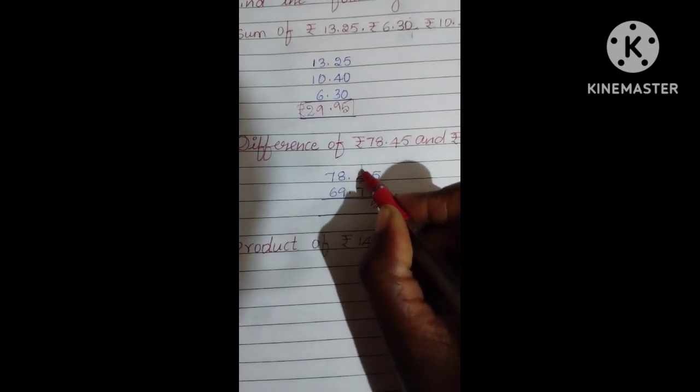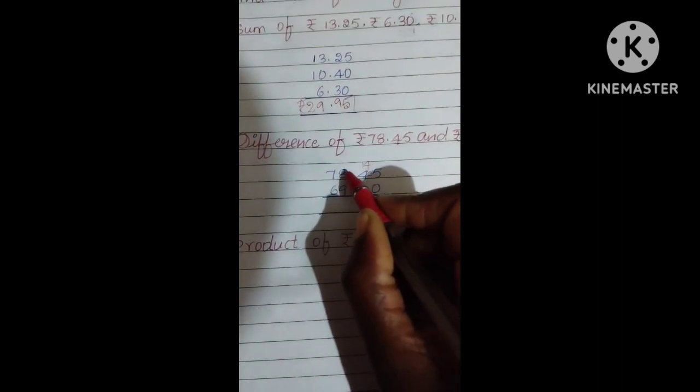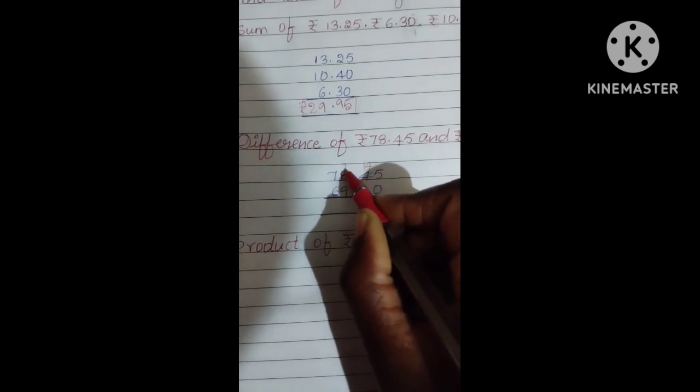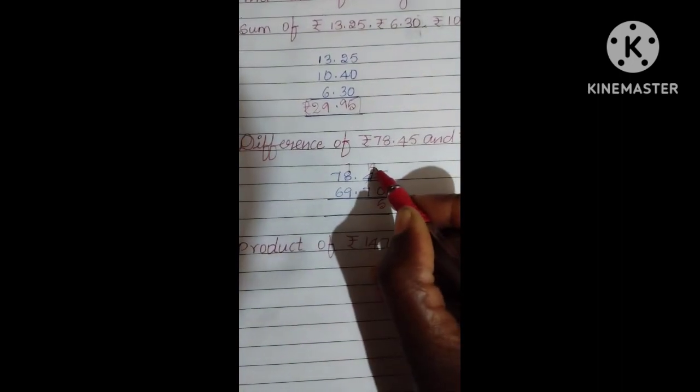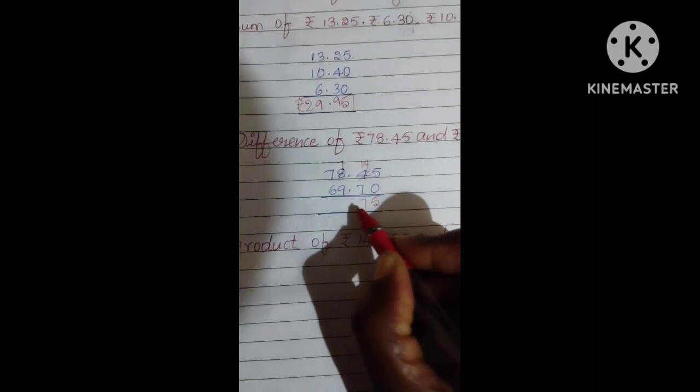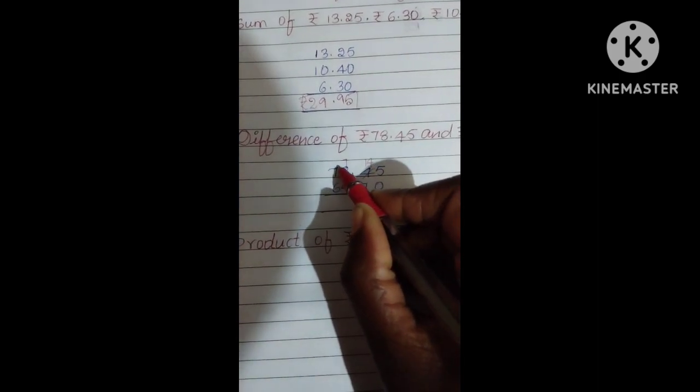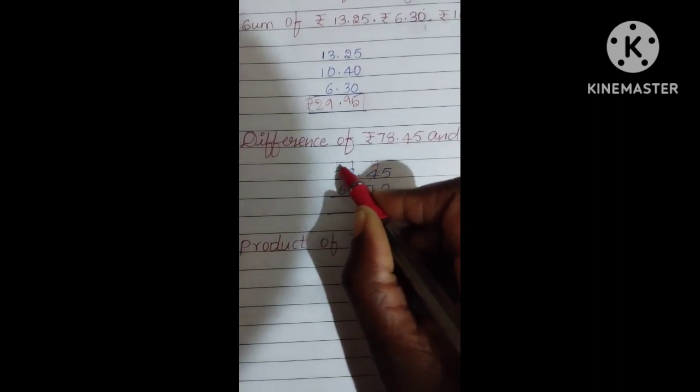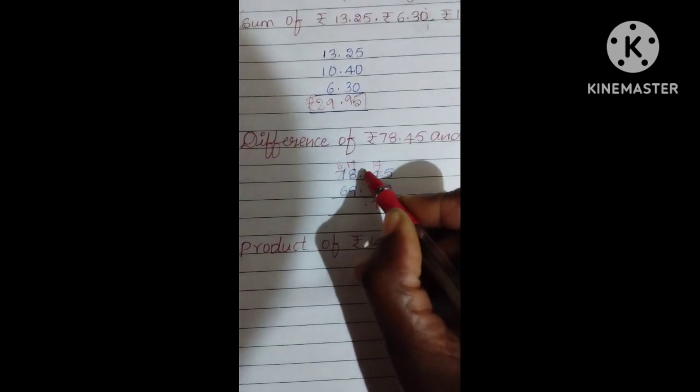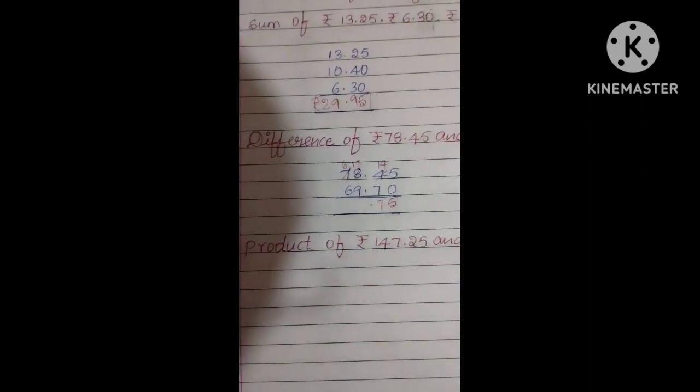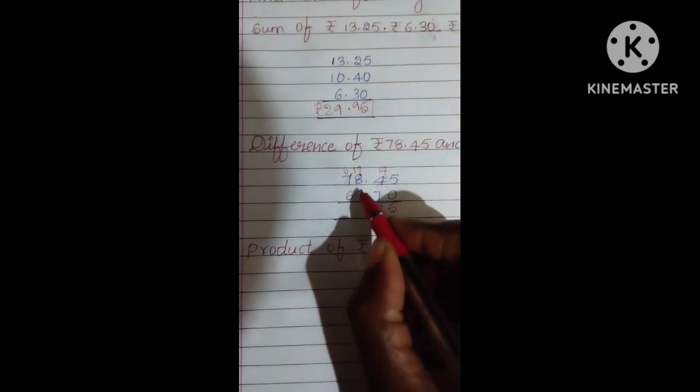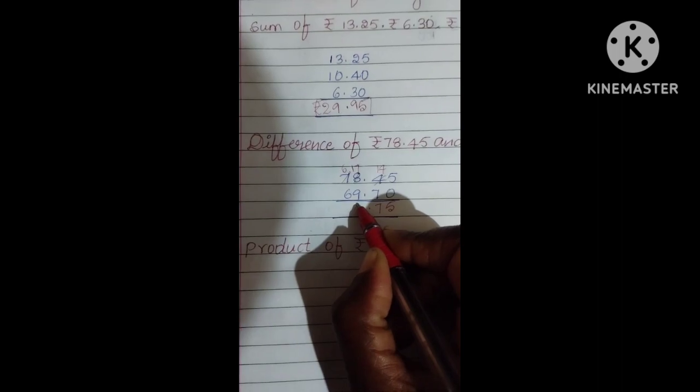So you need to take borrow here. 14. From 8, we want to take. Here we have 7. Now, 14 minus 7, 7. 7 minus 9 also can't go. So again, you want to take borrow. Here we have 6. Here we have 17. Now, 17 minus 9, 8.